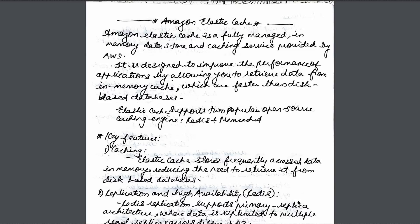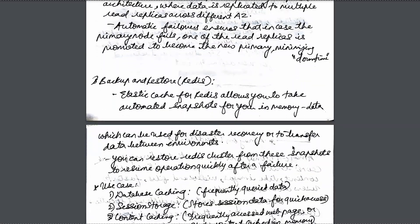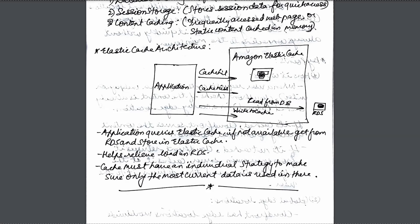We are going to learn about Amazon ElastiCache. Amazon ElastiCache is a fully managed in-memory data store, which is a caching service provided by AWS. It is designed to improve the performance of applications by allowing you to retrieve in-memory data directly from ElastiCache instead of getting it directly from the database. To support this, let me demonstrate with this diagram.